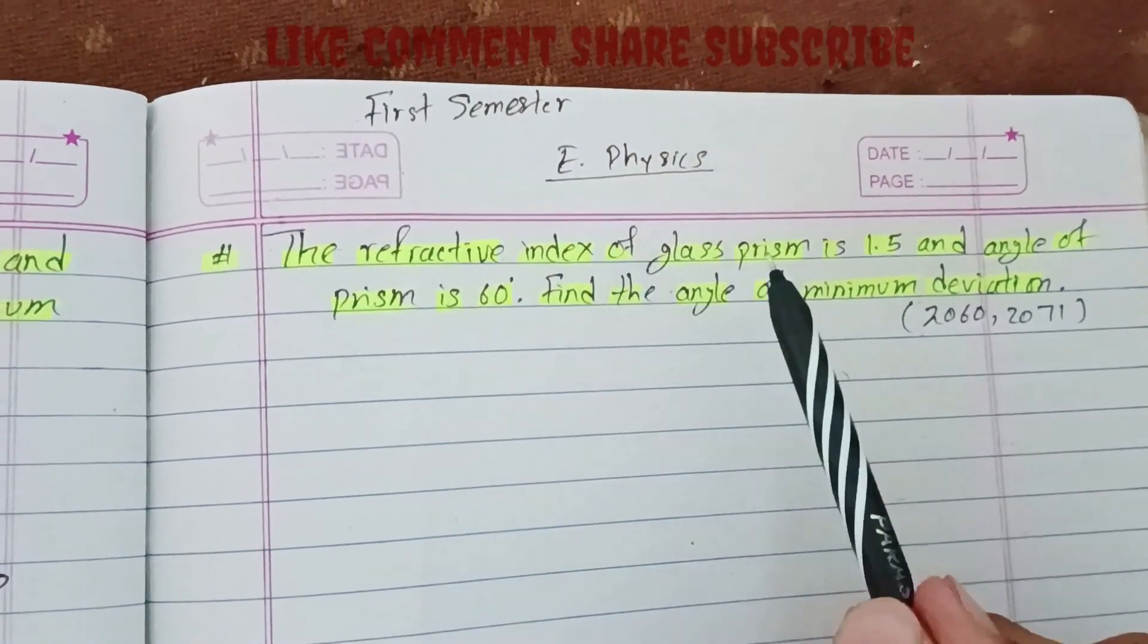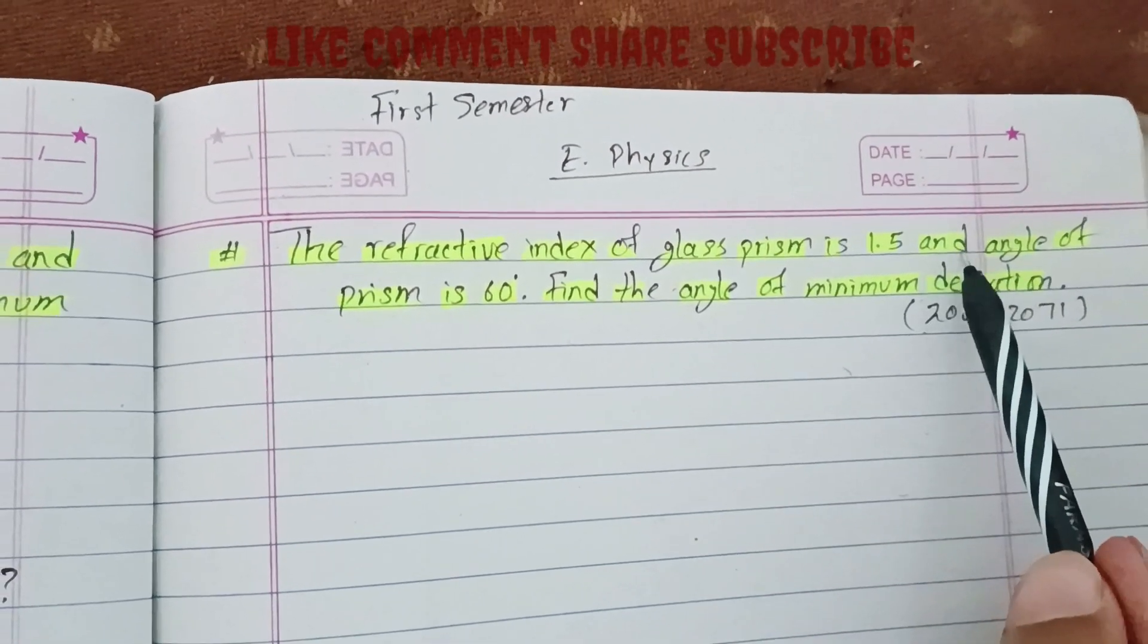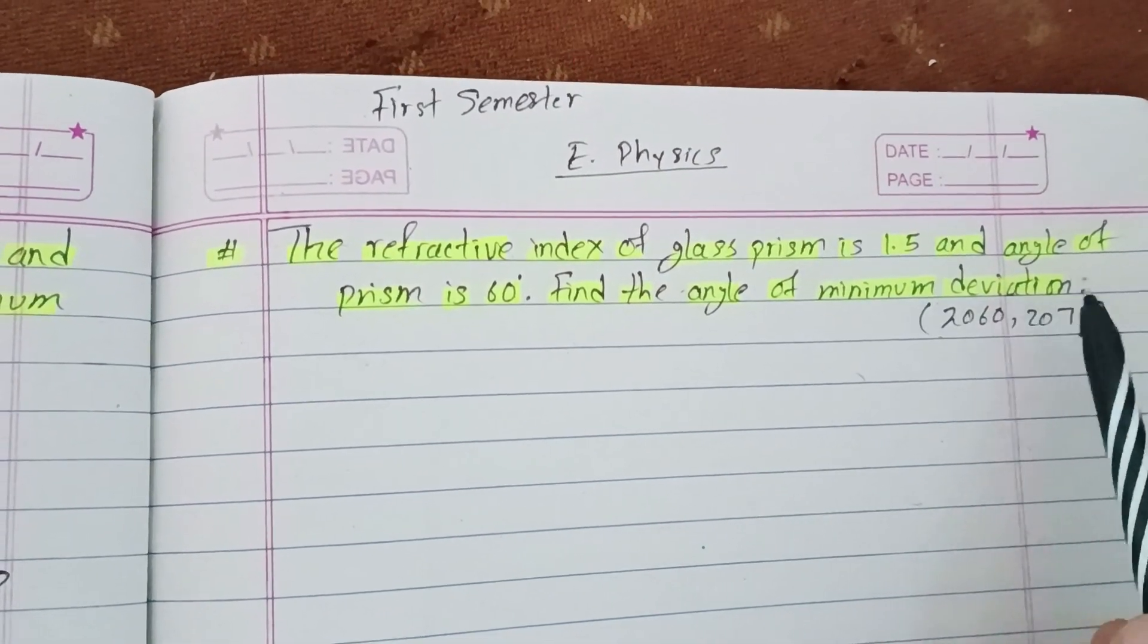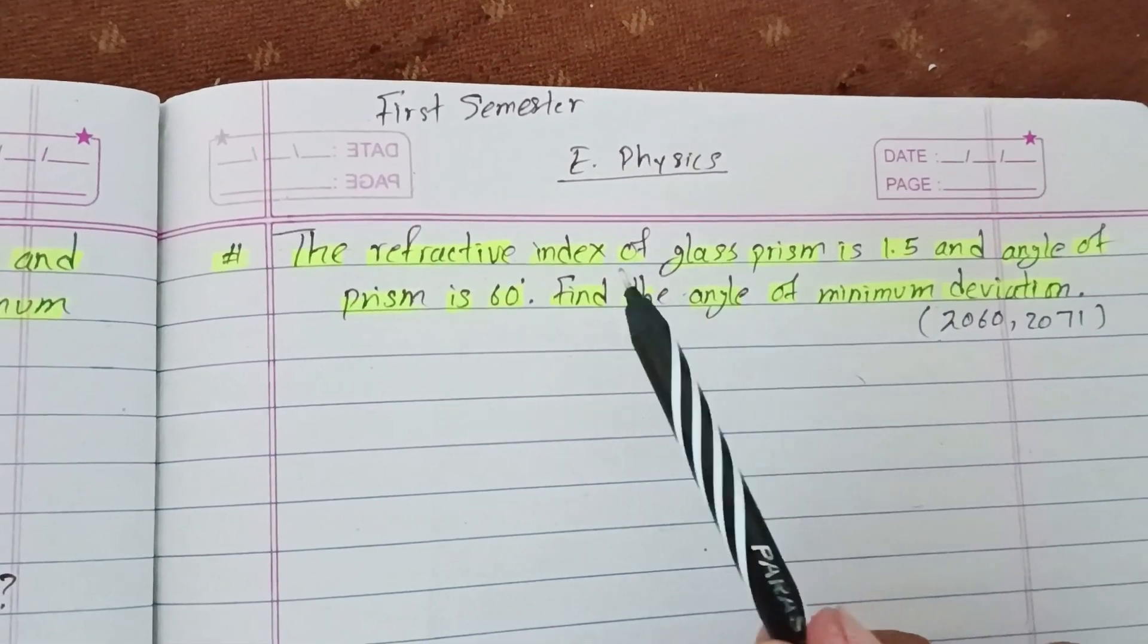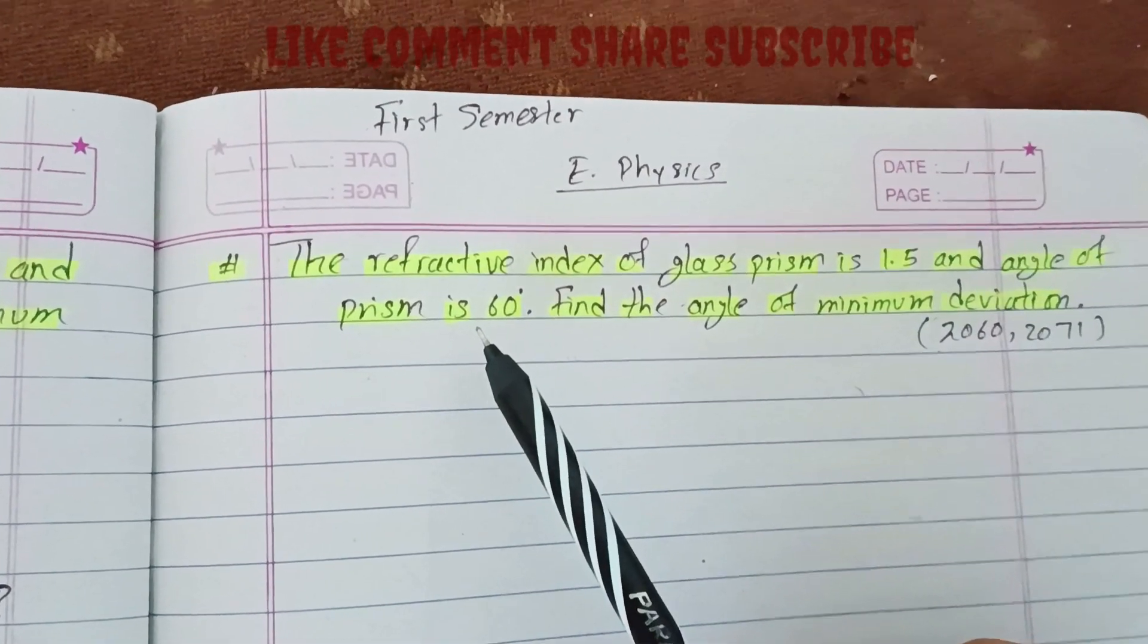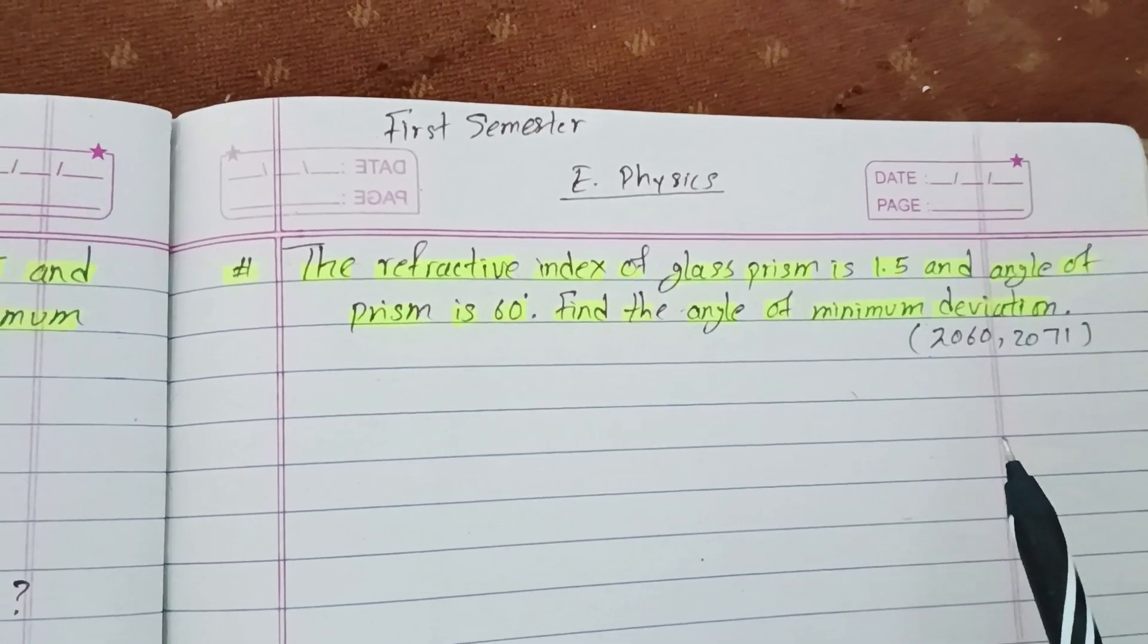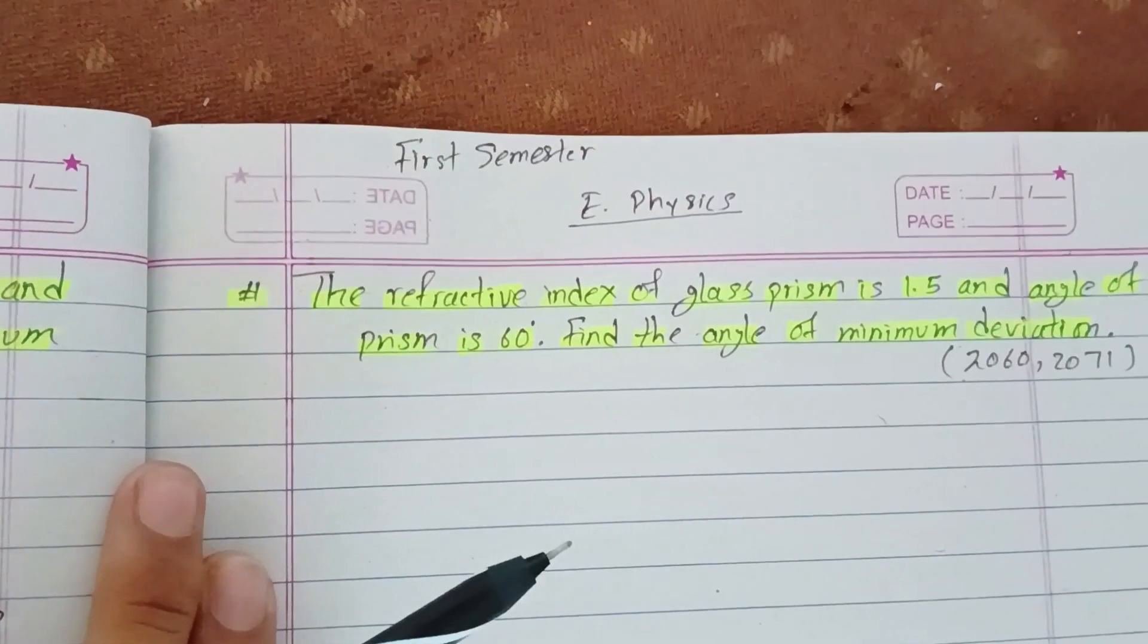The refractive index of glass prism is 1.5 and angle of prism is 60 degrees. We need to find the angle of minimum deviation. Let's solve this.